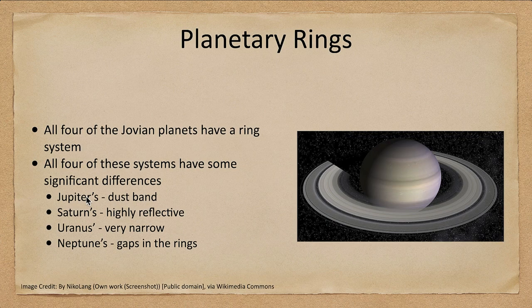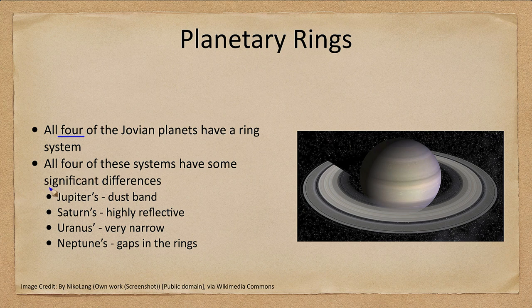So what do we see? Here is Saturn, the great ringed planet with the most prominent and best-known ring system, but we know that all four of these Jovian planets do have a ring system. And while they're similar in that they are rings, there are significant differences between them.